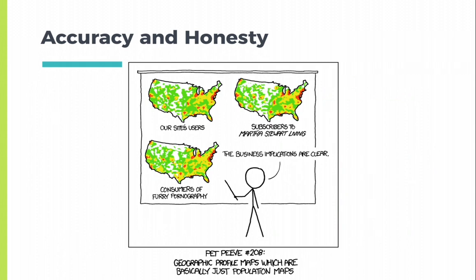Make sure that your map data is describing what you actually think it is describing. From this comic, you can see that these geographic profile maps all appear to show geographic clusters of activity, but really they are just showing population density.